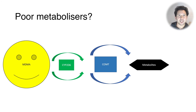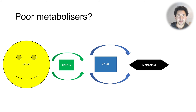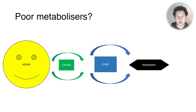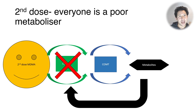There was a theory that some people might be poor metabolizers of MDMA because some people lack the genes for the CYP2D6 enzyme — maybe five to ten percent of the population. However, what's been found is that this isn't really clinically relevant, because everyone becomes a poor metabolizer of MDMA once they've taken a second dose.